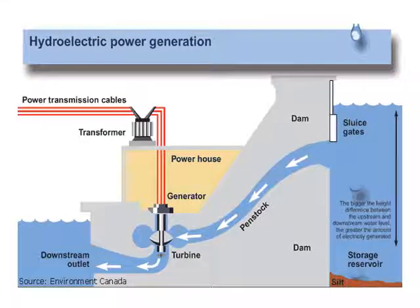In a hydroelectric power plant, you can see the dam storage reservoir. Water flows down through the dam gates to run the turbine, which is connected to a generator to produce electricity.